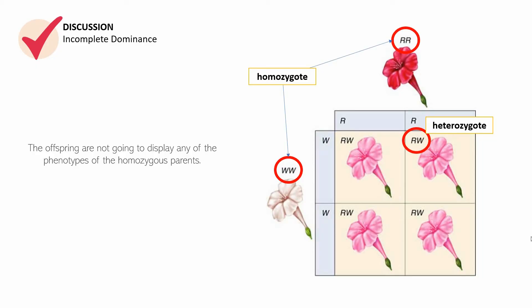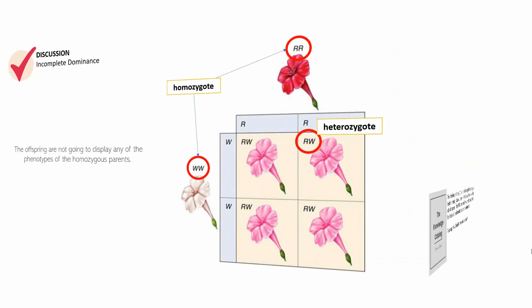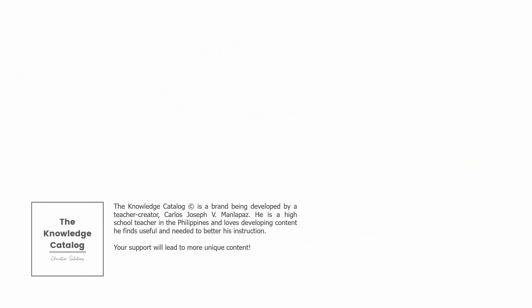So that's it for the discussion on incomplete dominance. I hope that you will not be forgetting the terms so far that we've added to your vocabulary. That is the last part for this session. I hope that you will remember the following terms: heterozygote, homozygote, phenotype, genotype, and of course incomplete dominance because you will be needing that for the next video in this series.